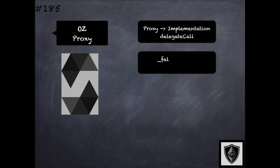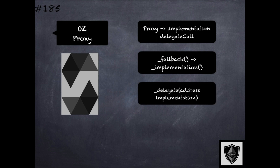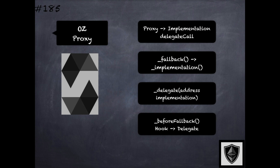Coming back to this particular proxy library, it provides a fallback function that forwards the call to an implementation. It also provides a delegate function that allows one to specify the delegation to a specific implementation contract. This also allows specifying a hook via the before-fallback function that gets called before falling back to the implementation.